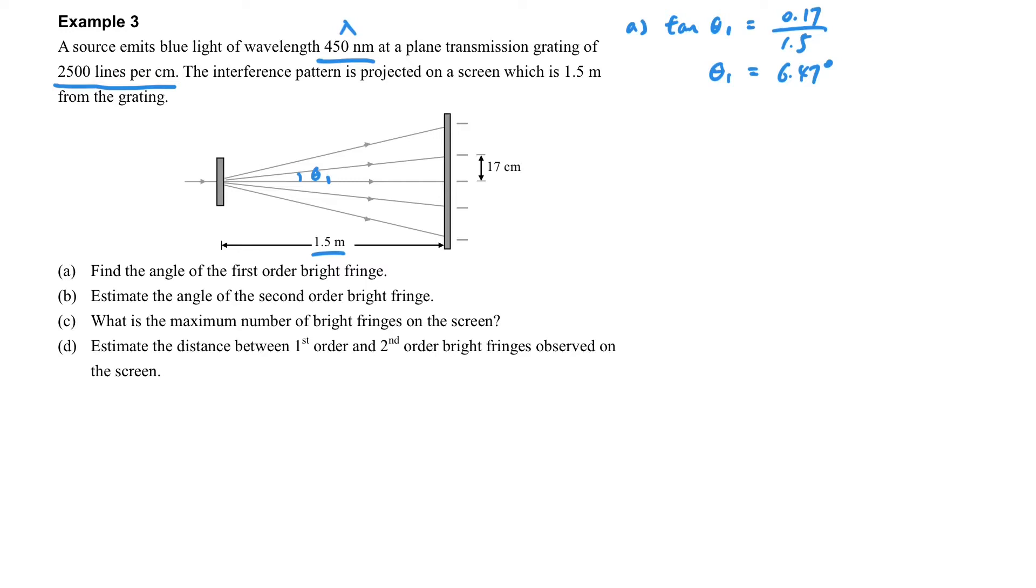In this part we don't need the special equation d sin theta = n lambda, because we have the vertical distance and the horizontal distance, so we can use the tangent to solve it. When you do this kind of question, you should be aware that besides d sin theta = n lambda, we can also use the tangent to solve the problem geometrically.